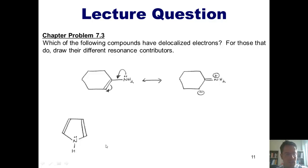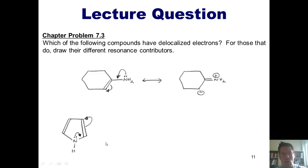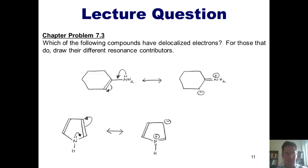Here's another example. You can imagine the nitrogen lone pairs pushing in to form a nitrogen double bond with the carbon shown here to the right. In doing so, however, the pi electrons being shared between these two carbons would have to push up and onto the carbon shown at the upper right-hand corner, giving it a negative charge and the nitrogen a positive charge. Once again, that nitrogen still has a full octet — the reason it's positively charged is because it's sharing more electrons than it likes to. Nitrogen in a neutral state likes to have three bonds; this nitrogen has four.